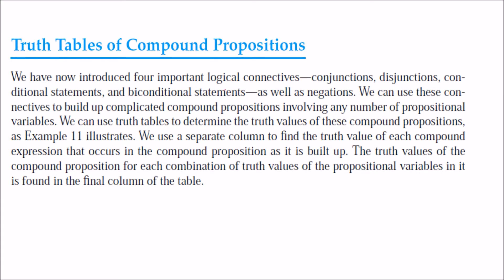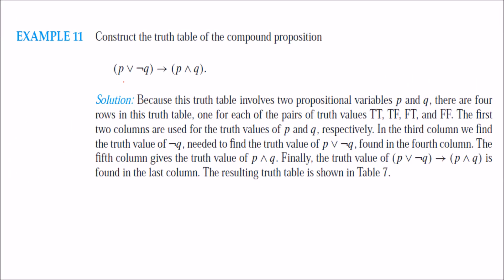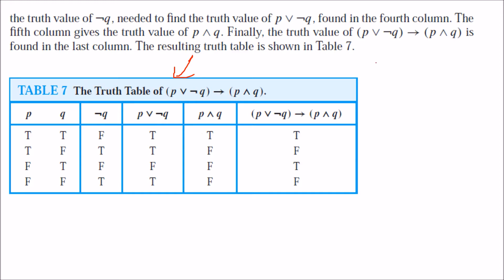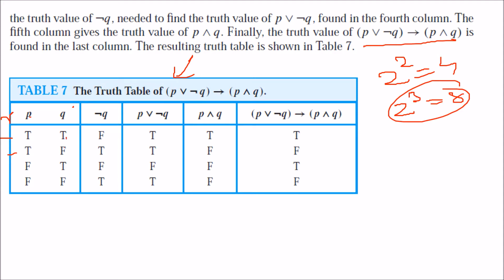Truth table of compound propositions. We have seen conjunction, disjunction, conditional, and biconditional statements. We can now combine them. The best way is to show them in tabular form — the truth table. For example, p AND (p OR not q) implies (p AND q). With two variables p and q, there are four possible rows. With three variables, there would be eight rows. First, negate Q to get not Q. Then OR p with not Q — this is only false when both are false. Then AND p with Q — this is only true when both are true. Then apply the conditional: only false when antecedent is true and consequent is false.